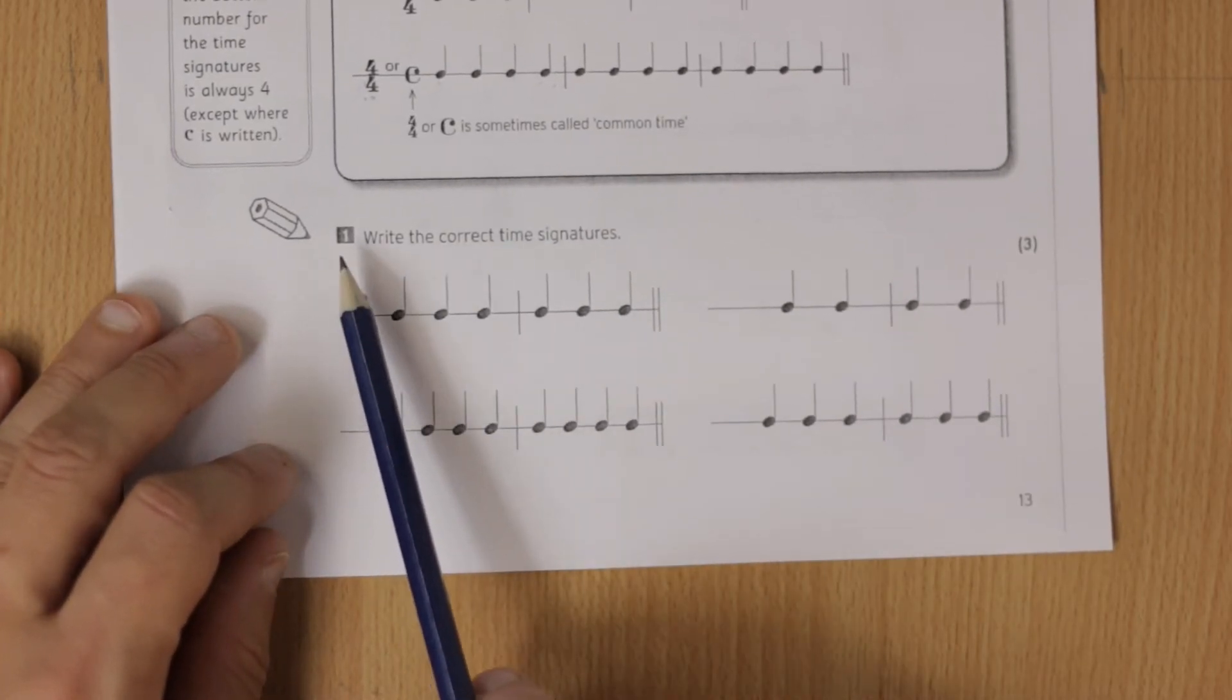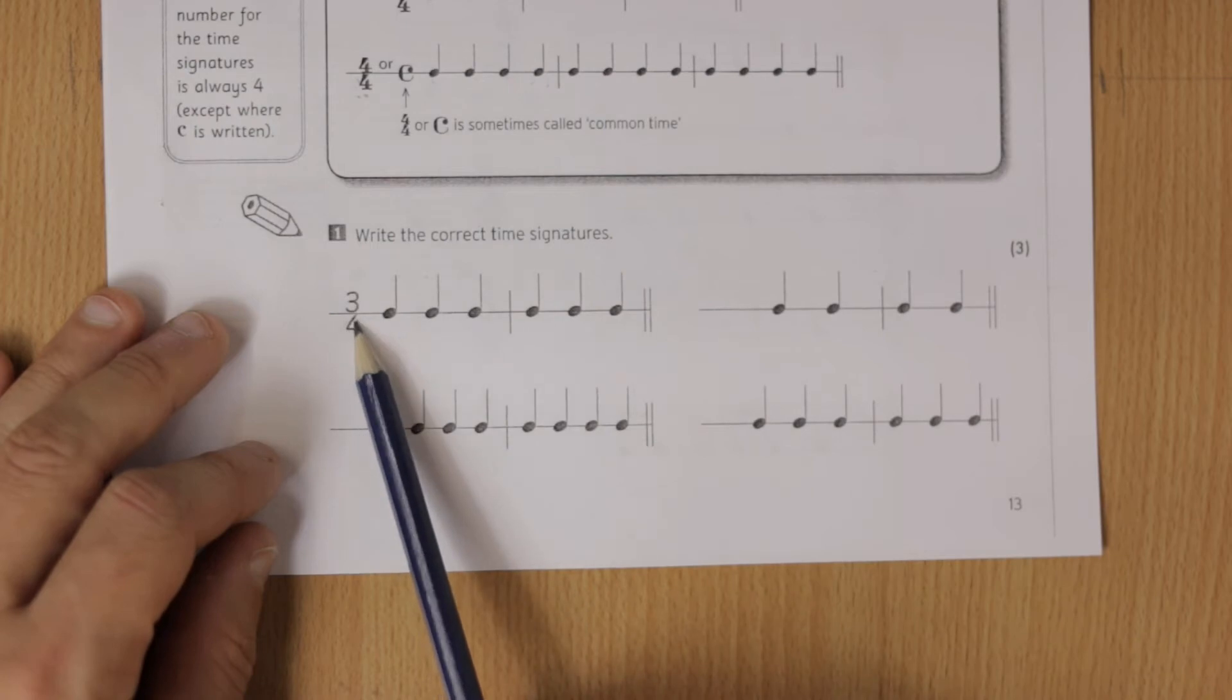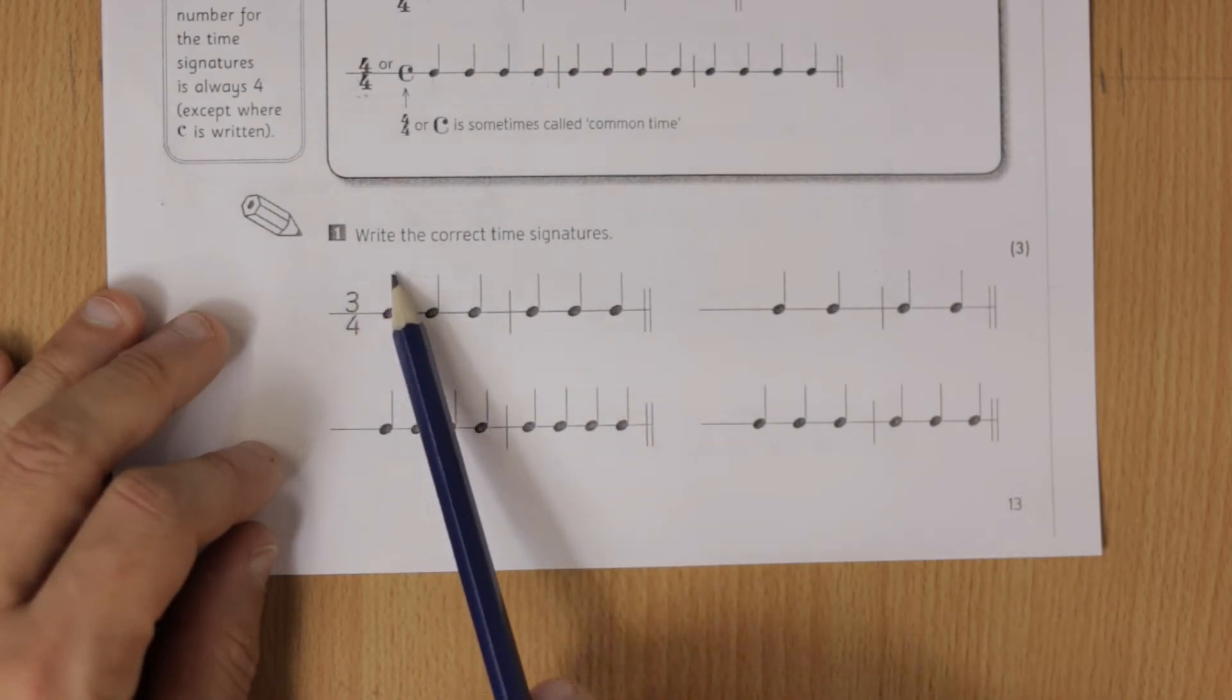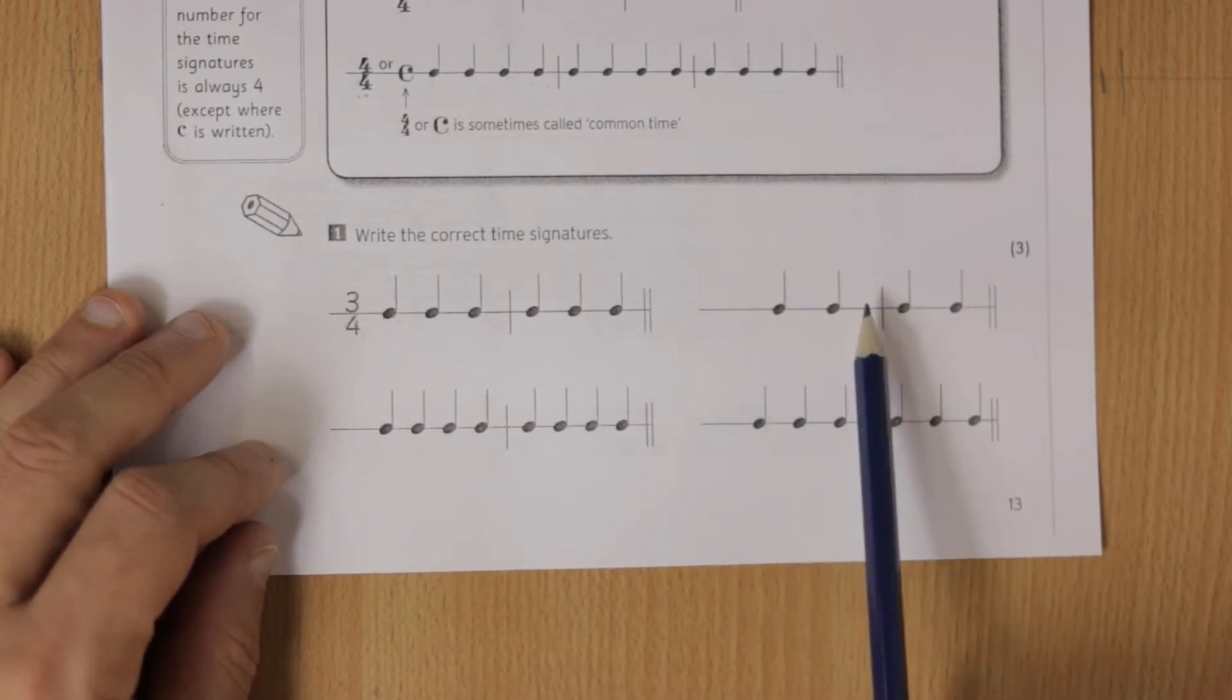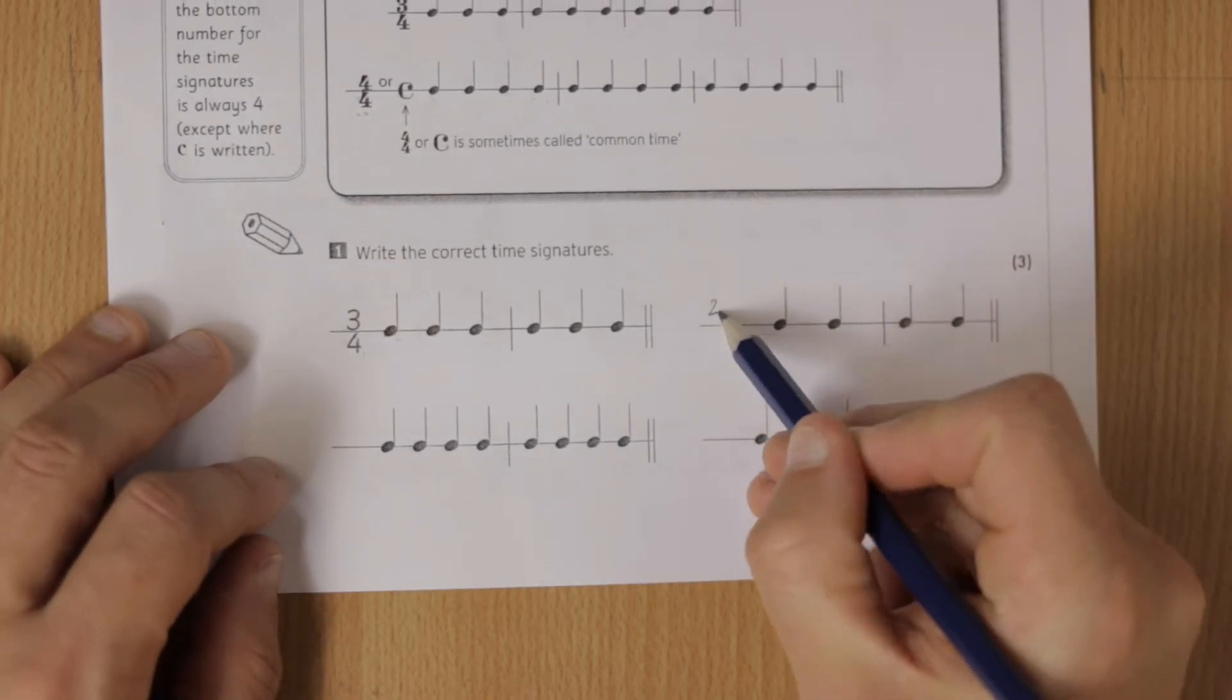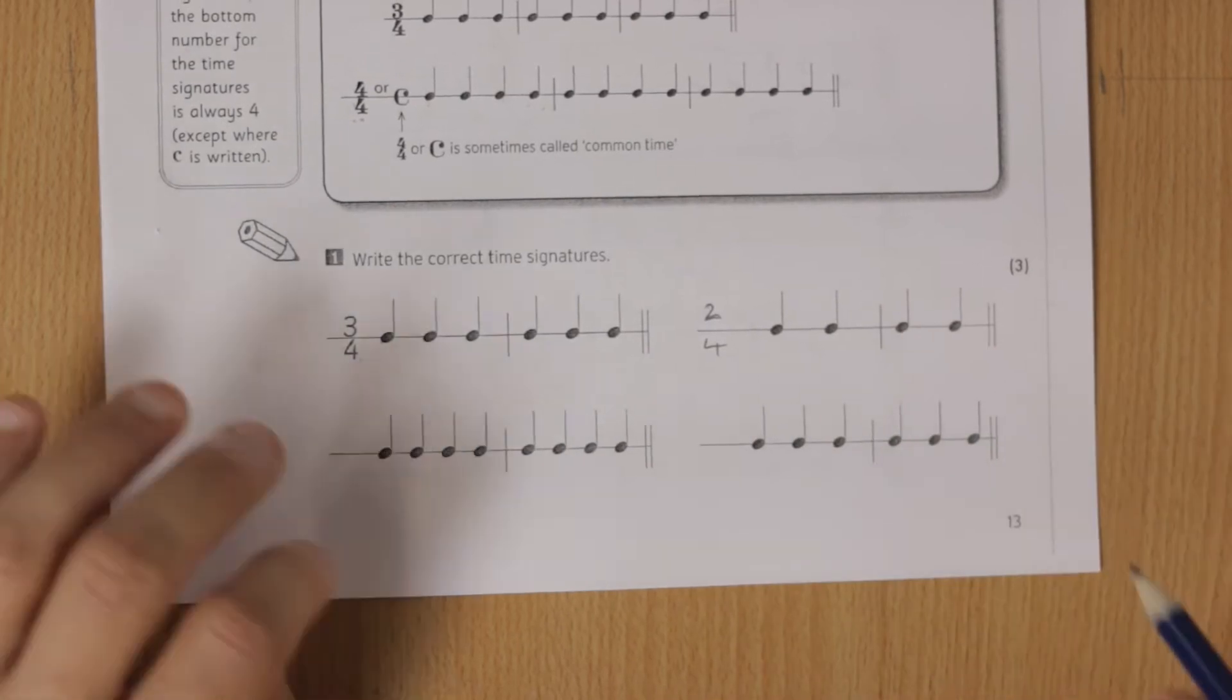Question one: write the correct time signature. We've got one done for us. You can see there's three beats in each bar, so it's going to be three, and they're crotchet beats, so three-four. What is this? Two there, and they're crotchets, so it's going to be two-four. I'll leave you to do the rest.